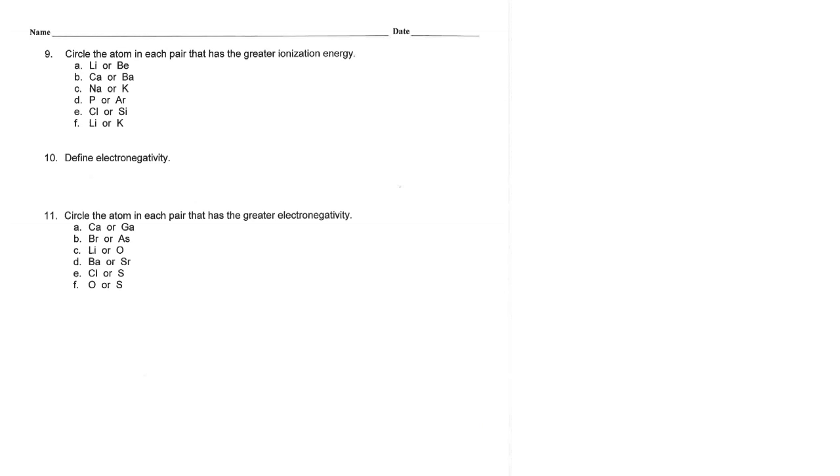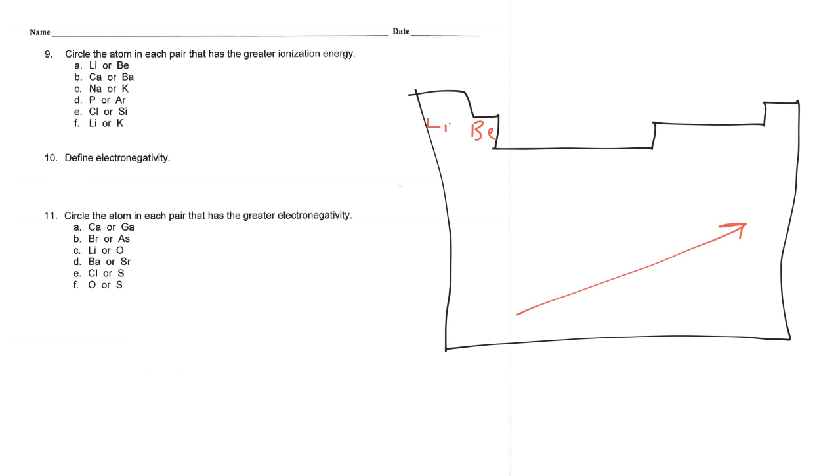On to the back side. We've got some more where we're doing these comparisons. Let's just pick one of these. I think we did the electronegativity one earlier, so let's do the ionization. Let's do number nine. Again, I sketch a quick periodic table. Does not have to be perfect. There we go. Lithium or beryllium. So, one right next to the other. We have lithium and beryllium.